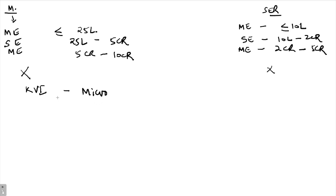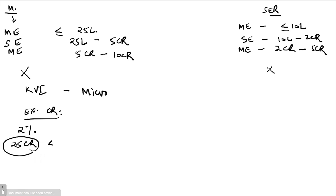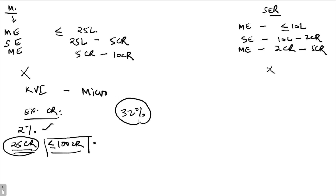The third category is export credit. For domestic banks, the target is 2% of adjusted net bank credit, subject to a sanction limit of 25 crore per borrower with a borrower turnover of less than 100 crore. For foreign banks with 20 or more branches, it is also 2% of adjusted net bank credit. For foreign banks with less than 20 branches, export credit is allowed up to 32% of adjusted net bank credit.